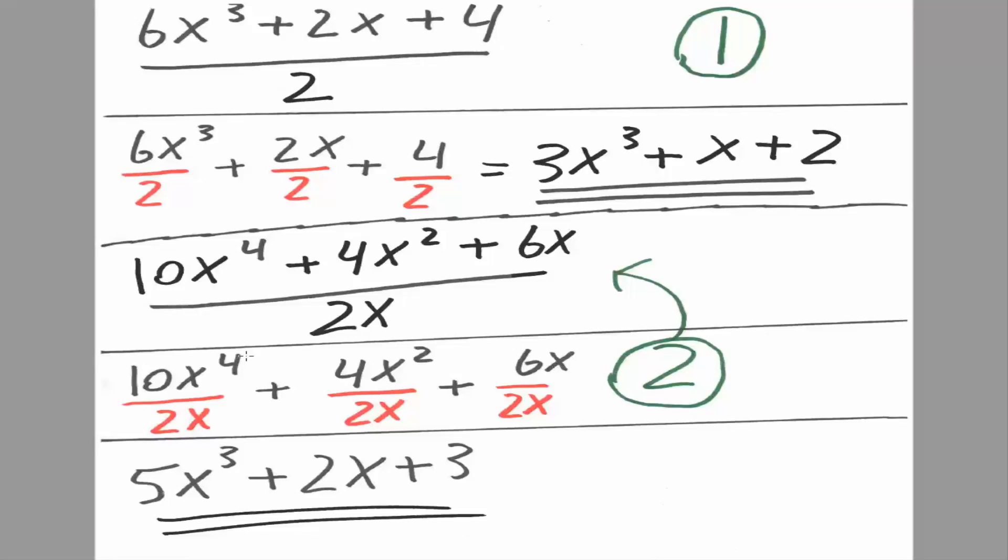So 10x raised to the 4th divided by 2x. 4x squared divided by 2x. 6x divided by 2x.